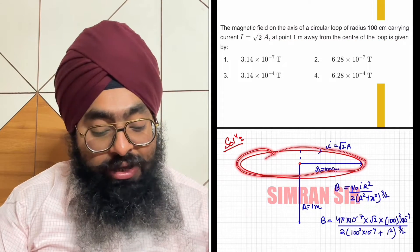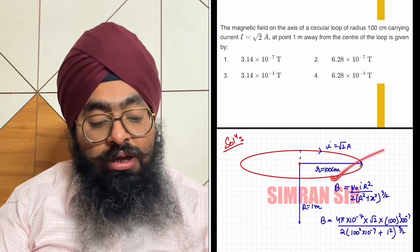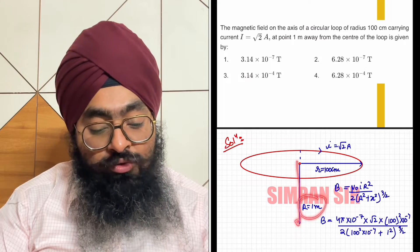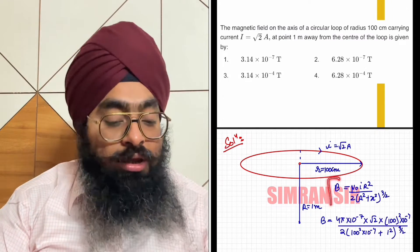We have a current carrying loop. The current given is root 2 amperes, radius is 100 cm. This is the axis point, which is at a distance of 1 meter, where we need to find the magnetic field.